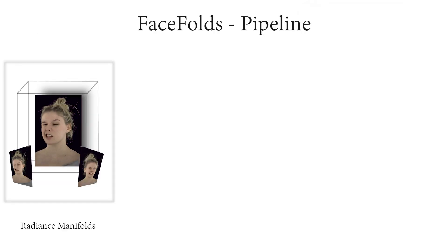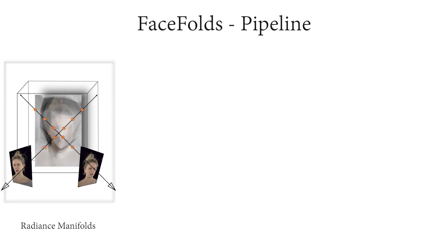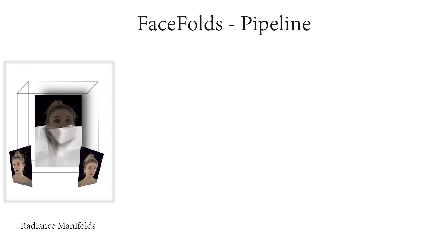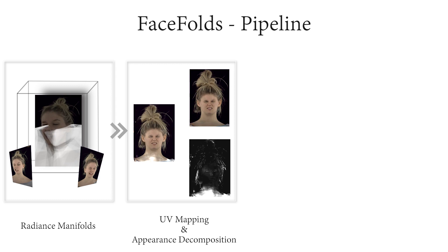Our technique begins with learning a volumetric representation for the dynamic face sequence using a set of static 2D radiance manifolds in the 3D space. We visualize a cross-section of the manifolds here. The radiance values are mapped from the 3D xyz space to UV space through spherical mapping and decomposed into view-dependent and independent components.